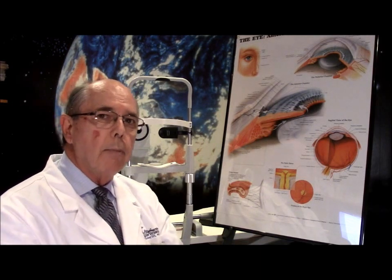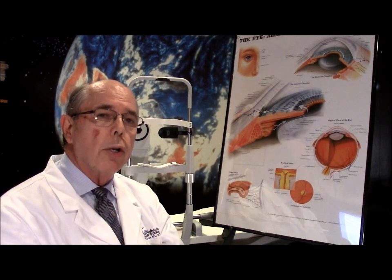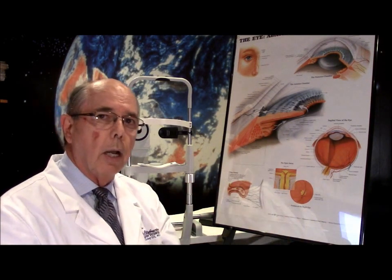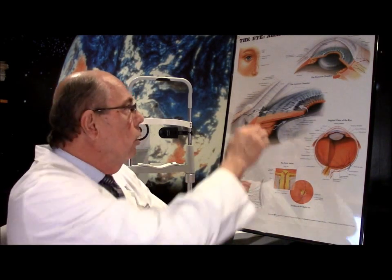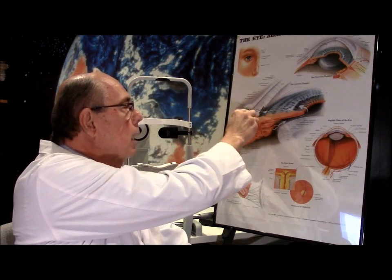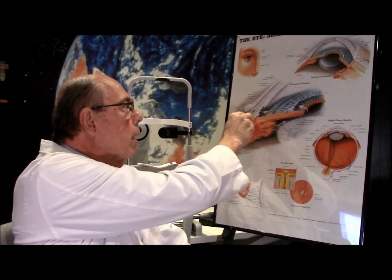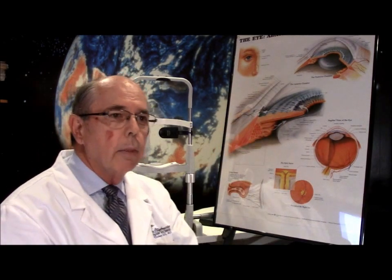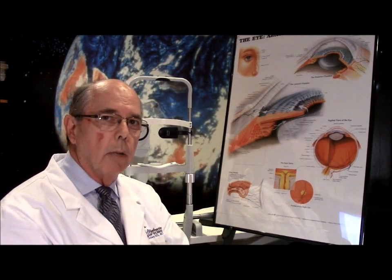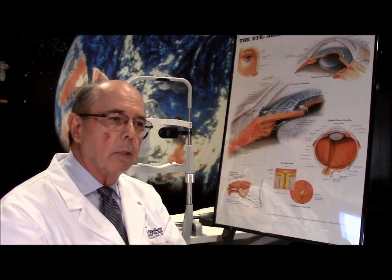There are two types of episcleritis. The most common type that I see is called nodular episcleritis, and this patient had nodular episcleritis, where there's a little nodule underneath the conjunctiva with a lot of blood vessels around it that are inflamed. Then there's diffuse or simple episcleritis, where there's not a nodule — it's just an area that's inflamed.